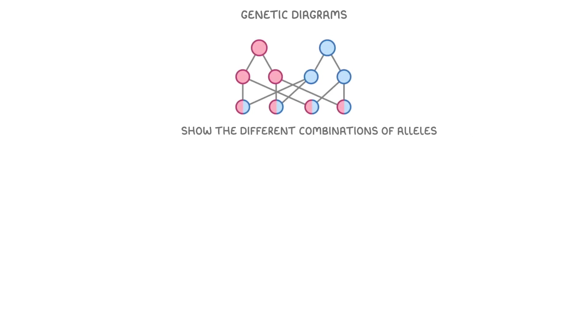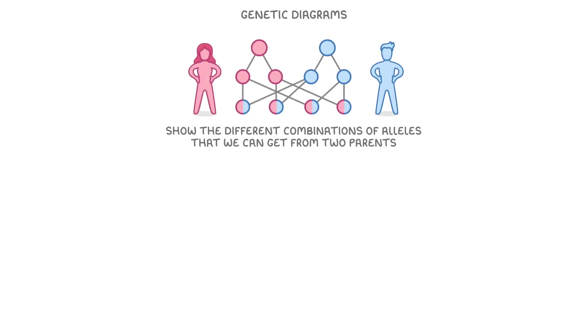In this video we're going to take a look at genetic diagrams, which show us all the different combinations of alleles that we can get from two parents.